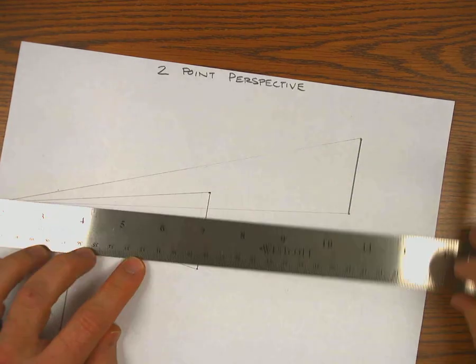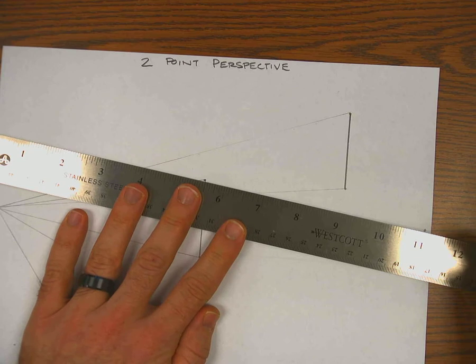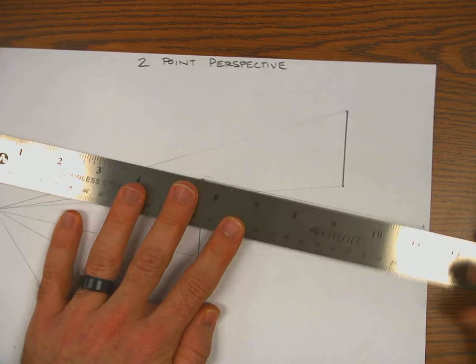I'm going to draw lightly because I'll have to erase some of this. And now I'm going to draw all the lines that go to the right vanishing point.